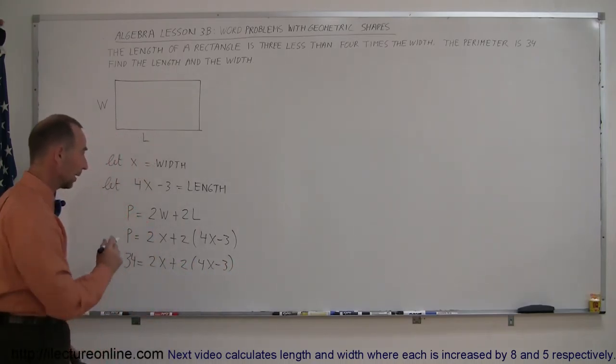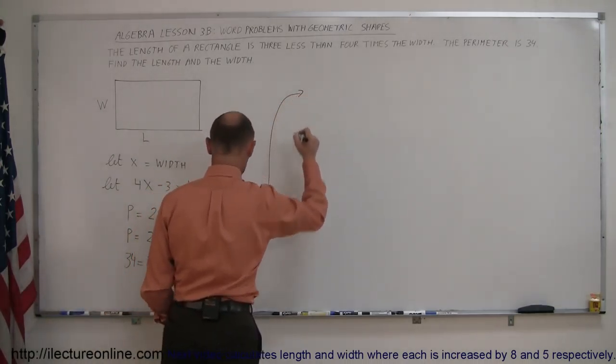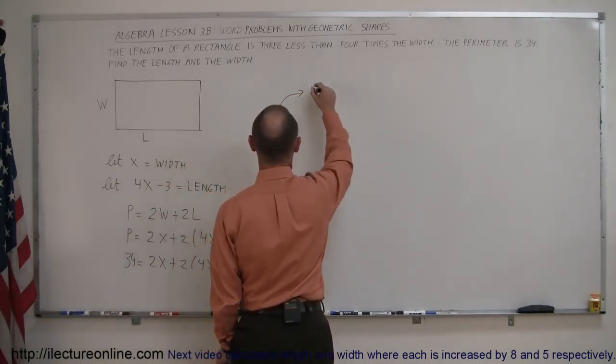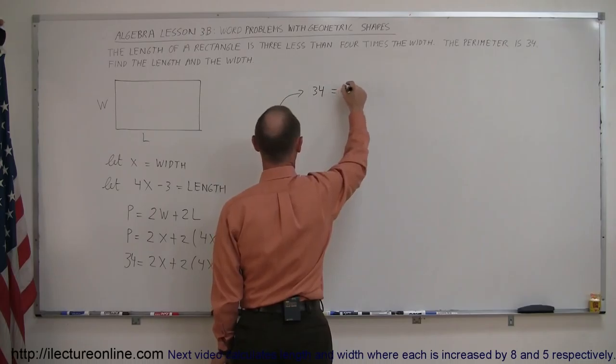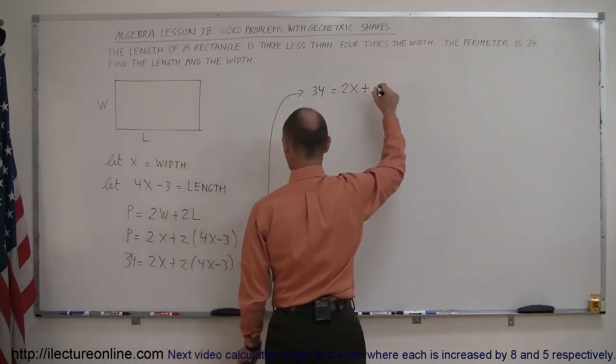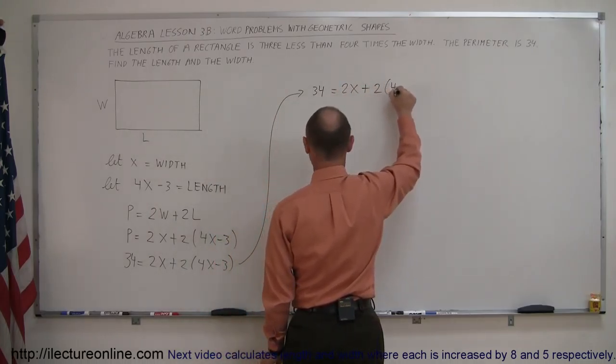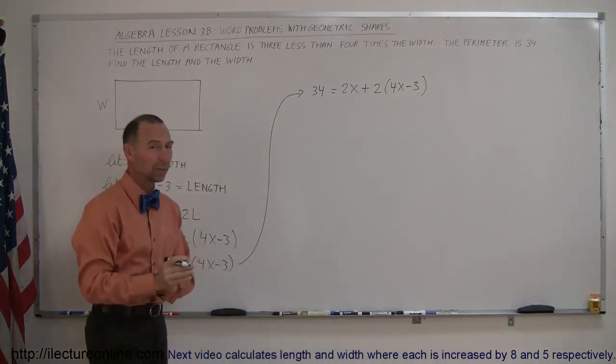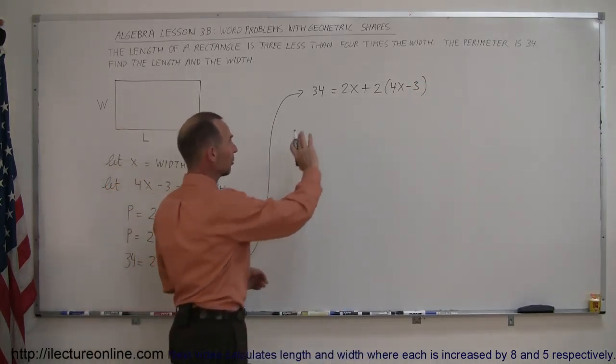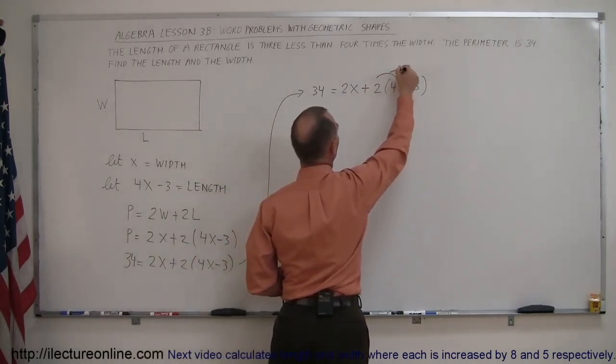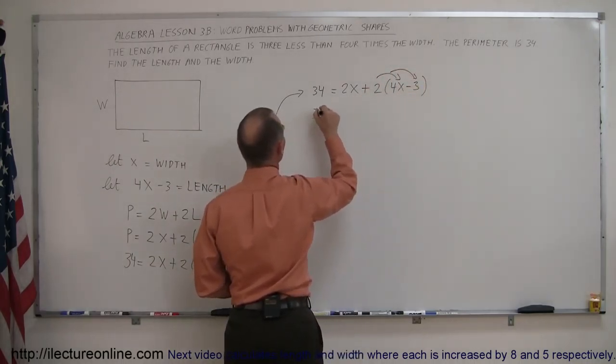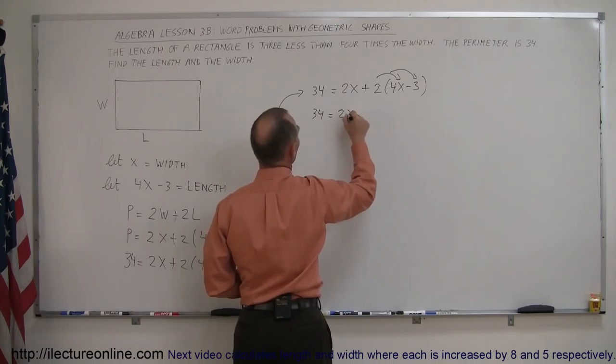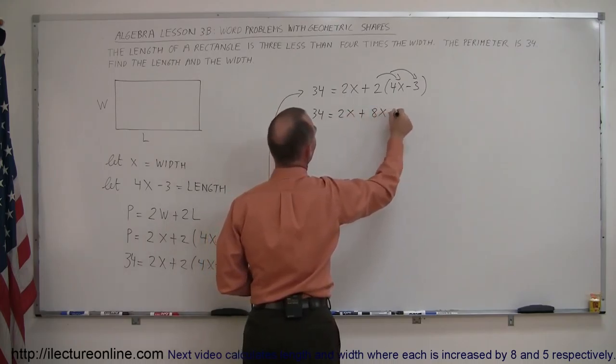Alright, giving myself some more room, rewriting it over here. I can say that this is 34 is equal to 2x plus 2 times 4x minus 3. Alright, so what do we do first? Well, we want to get rid of the parentheses first. So let's multiply the 2 with both the 4x and the negative 3. So we have 34 equals 2x plus 8x minus 6.